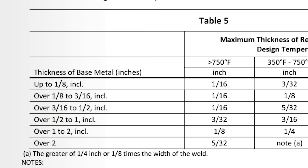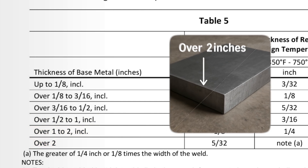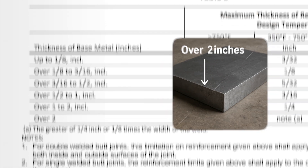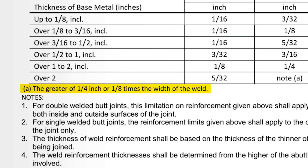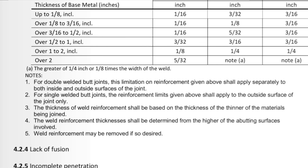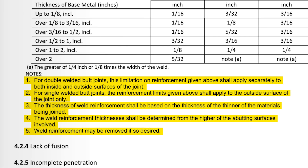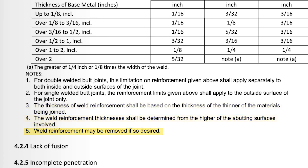You'll also see that as the base metal gets thicker, the maximum permitted reinforcement increases, but not always — so pay attention to the numbers and the footnotes. If the base metal is over two inches, the table refers you to Note A, which says to use the greater of 1/4 inch or 1/8 inch times the weld width. There are several other footnotes that affect how reinforcement limits are applied, covering things like whether it's a double-welded or single-welded butt joint, and which surface the limits apply to.